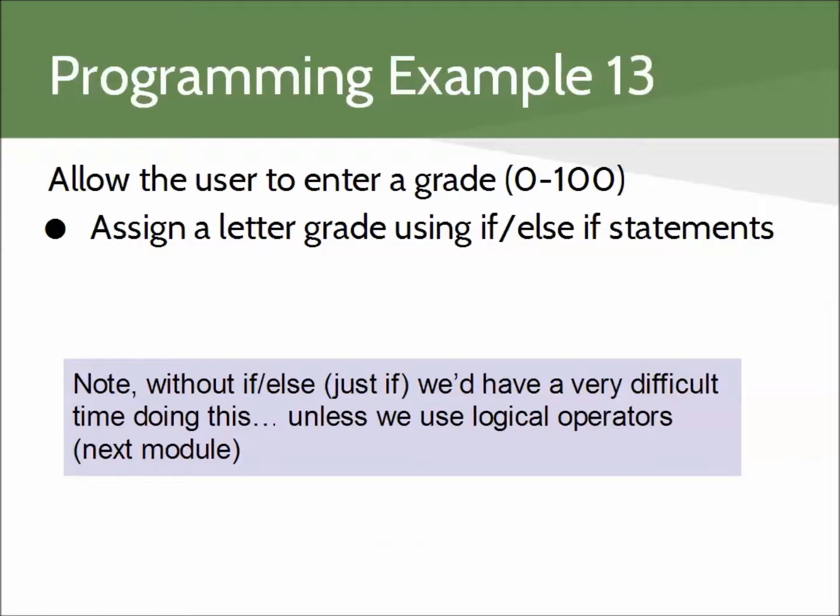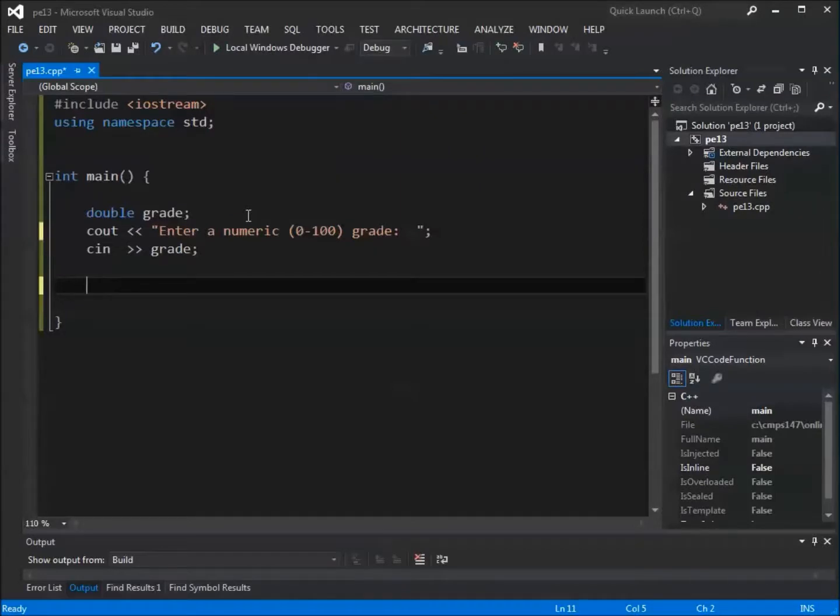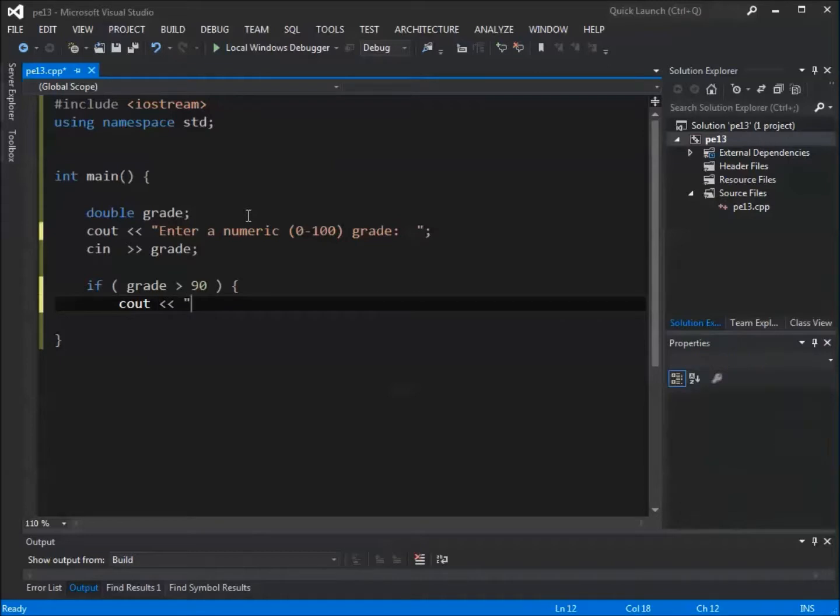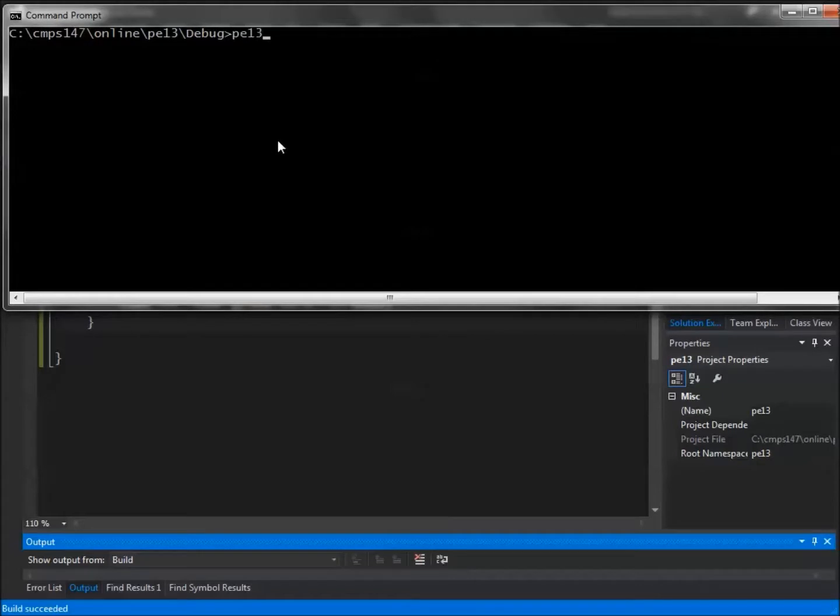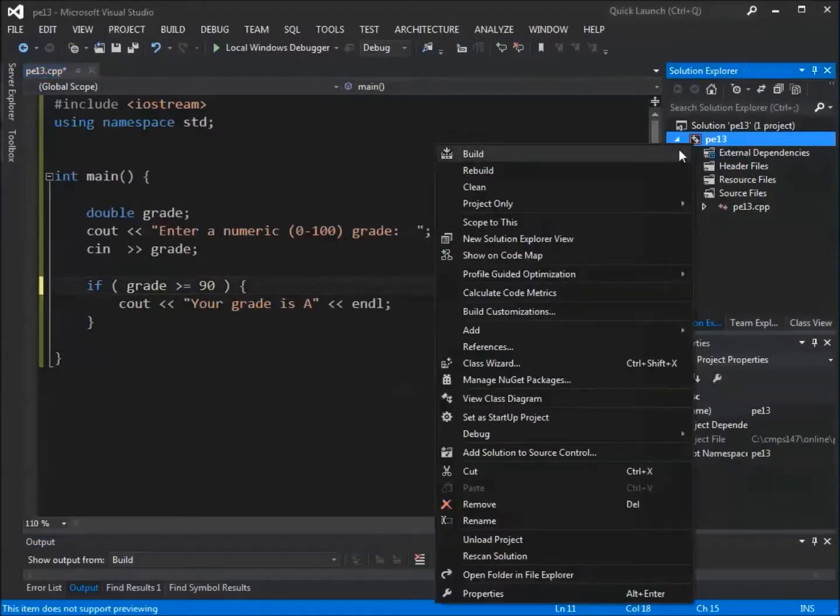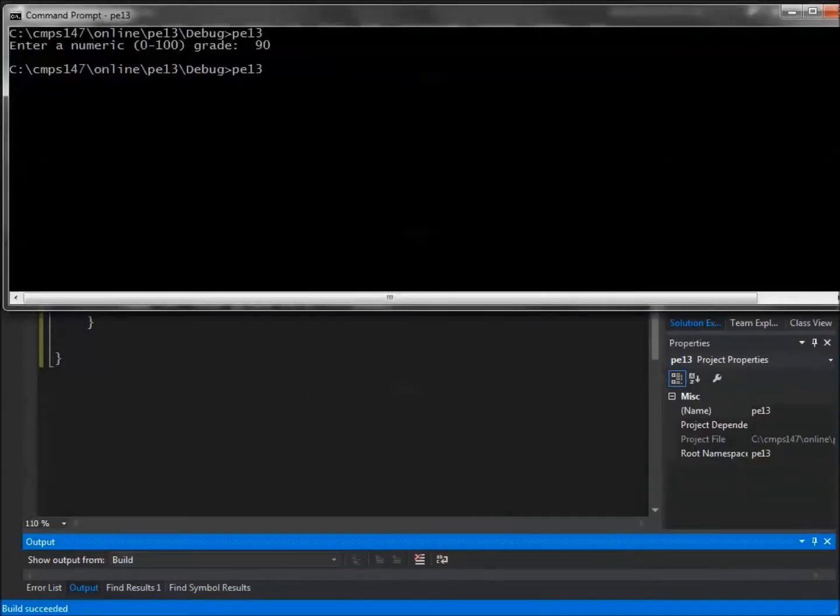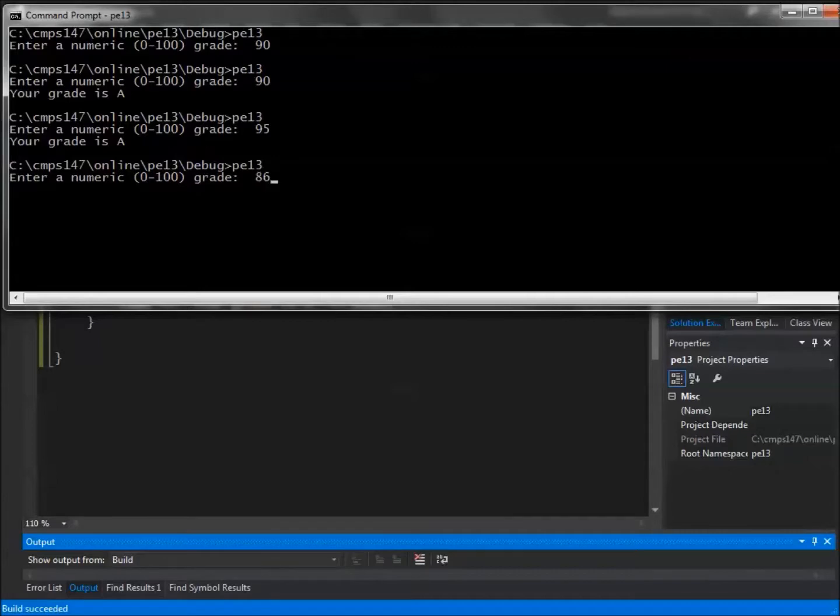So certainly this can be represented as a set of if and else if statements that systematically checks those thresholds. And only one, of course, only one letter grade should be assigned to a given number value that the user types in as their grade. And let's just start by writing the if clause for an A. We'll say grade is greater than 90. Your grade is A. And we'll go ahead and run that. Just make sure our if statements work correctly.